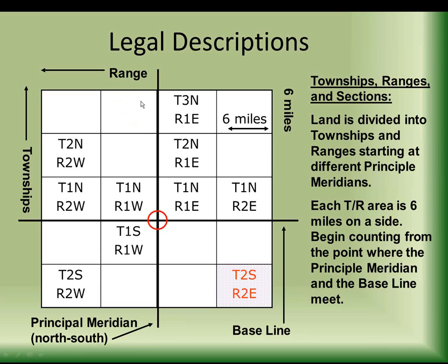So you own land in this township — it would be described as three townships north and one range west. Each one of these six-miles-by-six-miles squares is a township, and we describe where it is located in relation to the initial point of survey as the number of townships north or south of it. Say you own land in this township: it's two townships south of the baseline and one range east of the principal meridian. We just say township one north or range one east. That's how the description works.